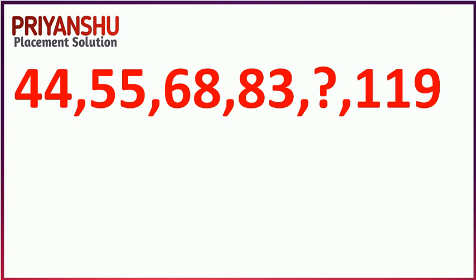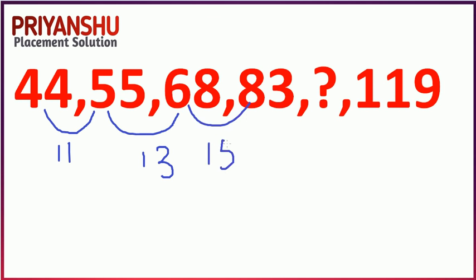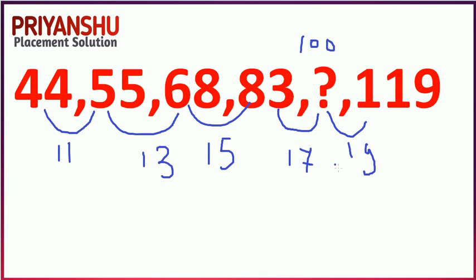Next question is also a series. The differences are: 11, 13, 15, 17, 19... So you need to add 17 to 83, which gives 100. Checking: 100+19=119. This logic works for every number in the series, so the answer is 100.